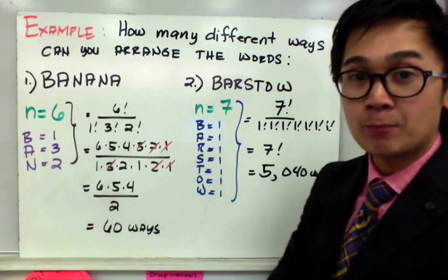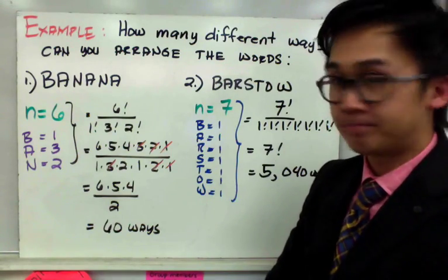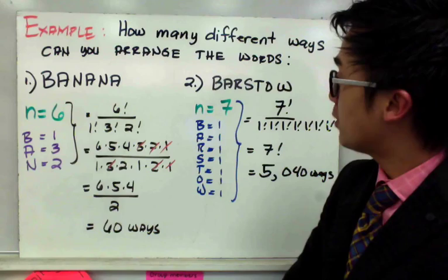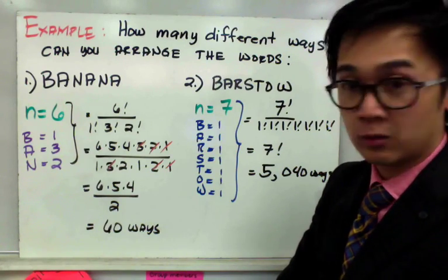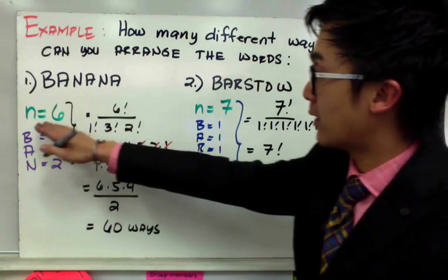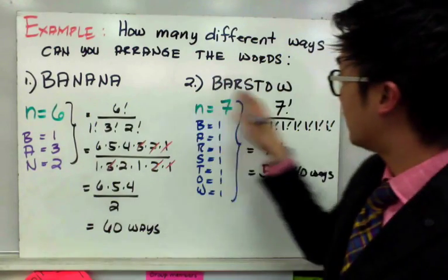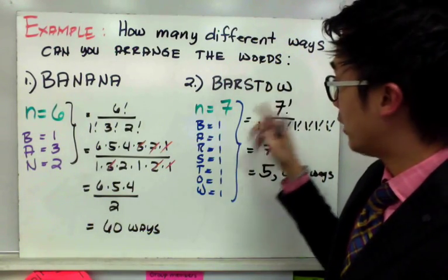Now, for second example, we have the word barstow. Now, to find the number of ways we can arrange barstow, all we need to do is find the value of n, which is here, 7, because we have 7 letters in the word barstow.